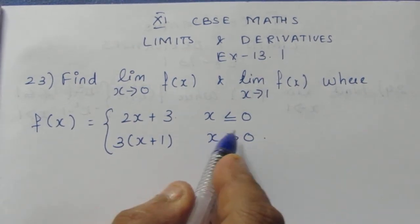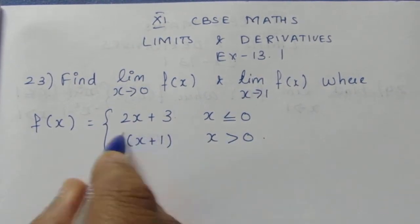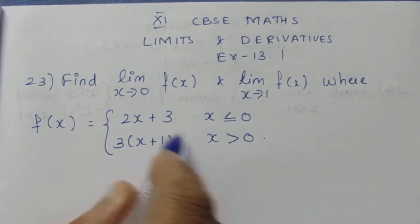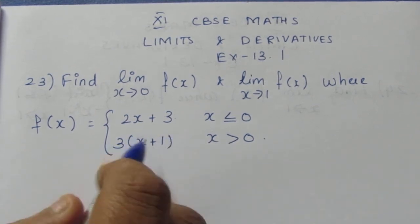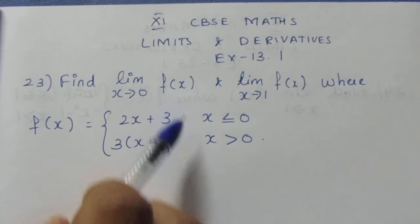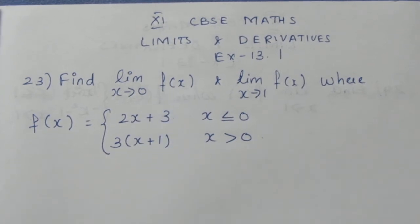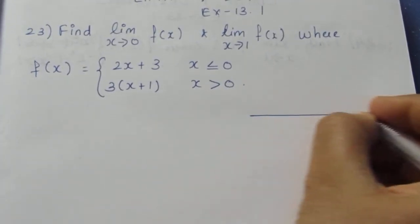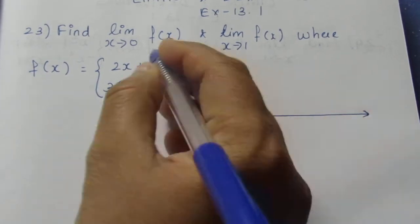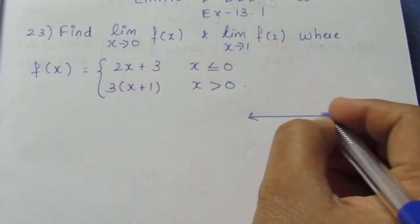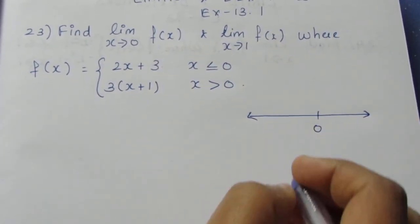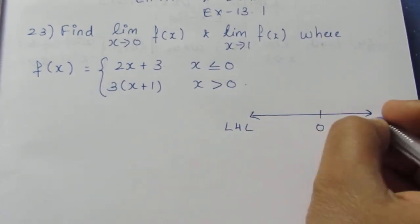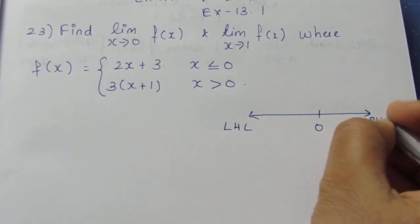If x is less than or equal to 0, this is f(x). If x is greater than 0, this is the other f(x). Now for limit x tends to 0 of f(x), I am approaching 0. This is the left-hand limit, and this is the right-hand limit.